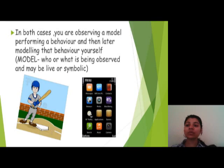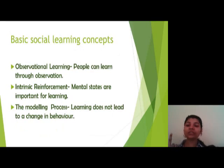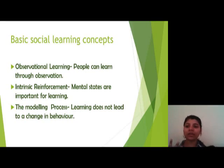The model is who or what is being observed, and may be live or symbolic. There are three basic social learning concepts: observational learning, which means people can learn through observation; intrinsic reinforcement, meaning mental states are important for learning; and third, the modeling process — noting that learning does not necessarily lead to a change in behavior.